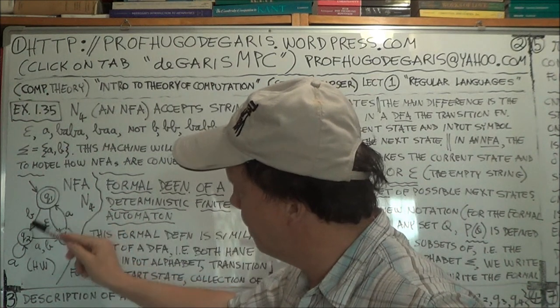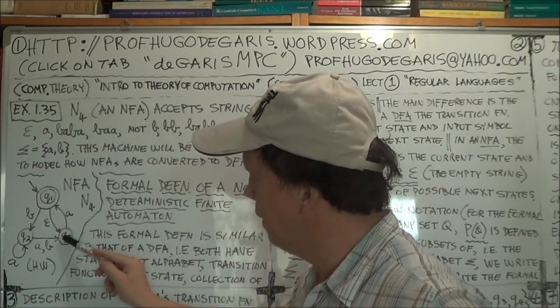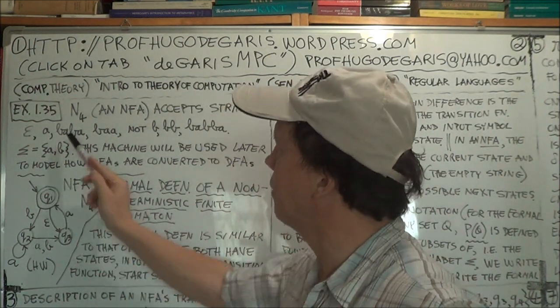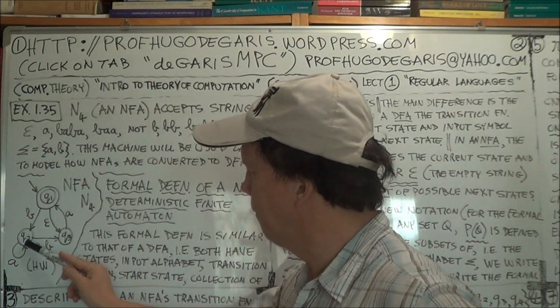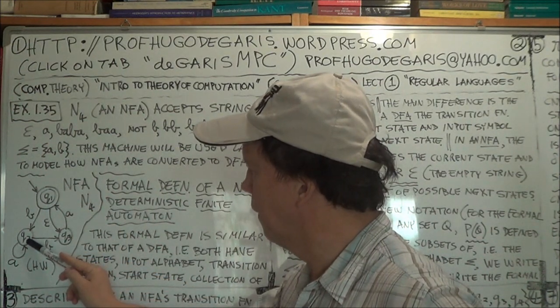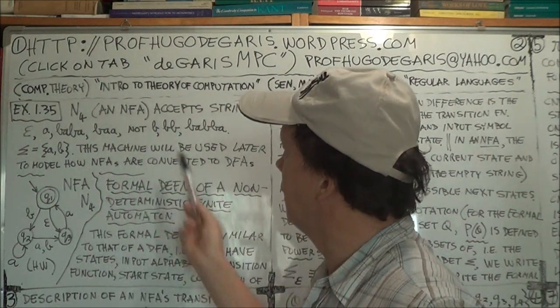Alright, so BABA, why does BABA work? Why is that string accepted? Okay, so B, A, B, A. Okay, I found one path that works. BABA, B-A-B-A, that works.